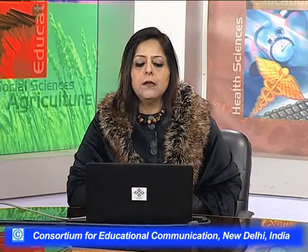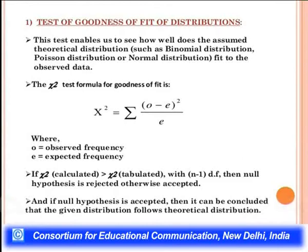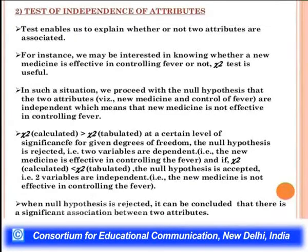Applications of chi-square: goodness of fit — to see how well a theoretical distribution such as binomial, Poisson, or normal fits observed data. Formula: χ² = Σ(O − E)² / E. If χ²(calculated) > χ²(tabulated) with n − 1 degrees of freedom, null hypothesis is rejected; otherwise accepted. If accepted, the given distribution follows the theoretical distribution.